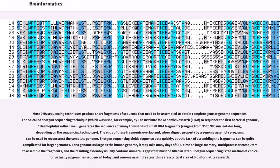Most DNA sequencing techniques produce short fragments of sequence that need to be assembled to obtain complete gene or genome sequences. The so-called shotgun sequencing technique, which was used, for example, by the Institute for Genomic Research (TIGR) to sequence the first bacterial genome, Haemophilus influenzae, generates the sequences of many thousands of small DNA fragments, ranging from 35 to 900 nucleotides long, depending on the sequencing technology. The ends of these fragments overlap and, when aligned properly by a genome assembly program, can be used to reconstruct the complete genome.